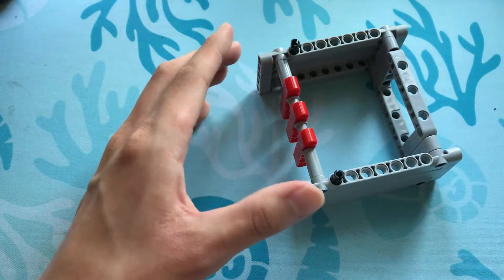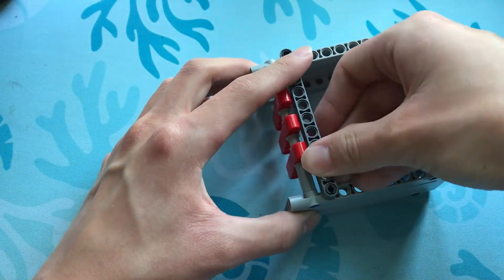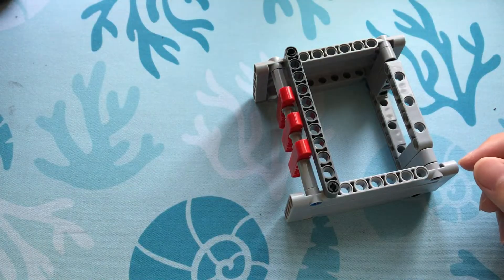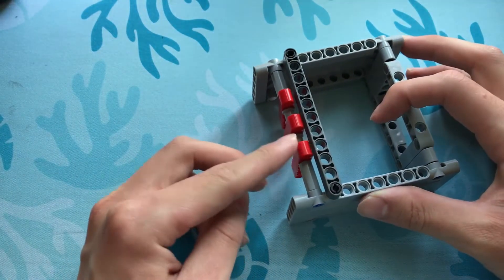And then, we'll take an 11-beam and connect it to these pins like this. This beam is what prevents the doors from opening a certain way.